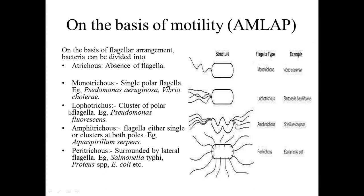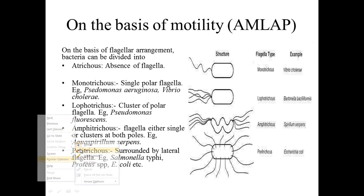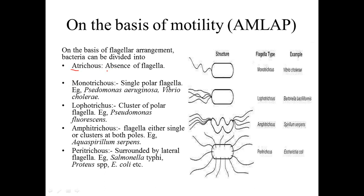The first type is the Atricus. Atricus means the absence of flagella — there is no flagella present, which means the bacteria cannot move.